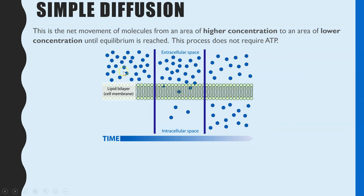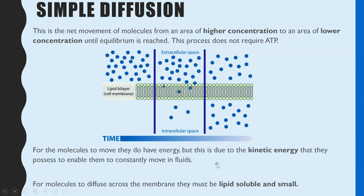We can see here we've got a high concentration on one side of the membrane compared to the other, and those molecules are starting to diffuse through until equilibrium is reached. A few other points about diffusion: for the molecules to move they do need energy, but that energy is just kinetic energy they already possess which enables them to flow. Simple diffusion only occurs in liquids and gases because they possess kinetic energy to flow — solids cannot undergo diffusion. For molecules to diffuse across the membrane they have to be small and lipid-soluble.